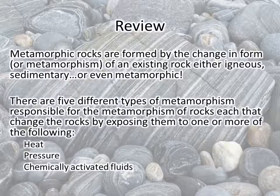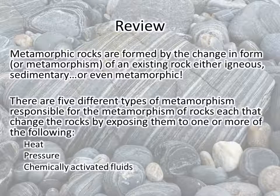Let's review. We have learned that metamorphic rocks are formed by the change of an existing igneous, metamorphic, or sedimentary rock. There are five different types of metamorphic environments that change the rocks by exposing them to heat, pressure, or chemically activated fluids. Metamorphic rocks can be divided into two groups — foliated and non-foliated. The textures and minerals you see in metamorphic rocks are a direct result of the heat and pressure the rock was exposed to during metamorphism.